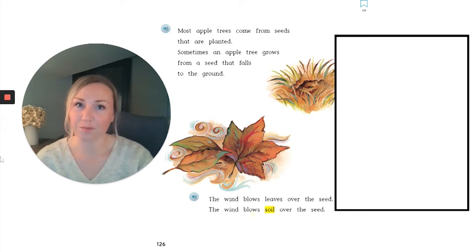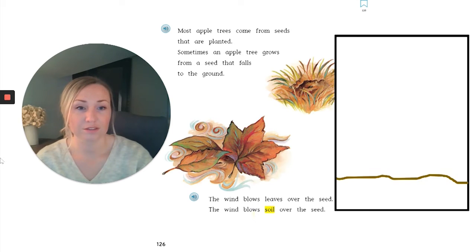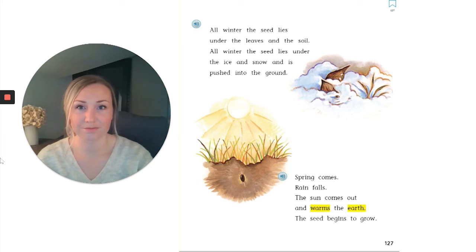So when we're thinking of the diagram we're going to make at the end of our reading, I just heard a fact. Our apple tree starts as a seed and the seed is under the soil. So I know that an apple tree grows below the ground and above the ground. So I'm going to need a line of soil. Here we go. All winter, the seed lies under the leaves and the soil. All winter, the seed lies under the ice and the snow and is pushed into the ground. Spring comes. Rain falls. The sun comes out and warms the earth. The seed begins to grow.